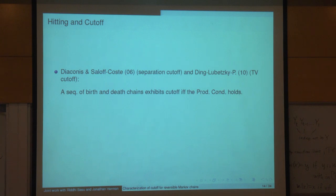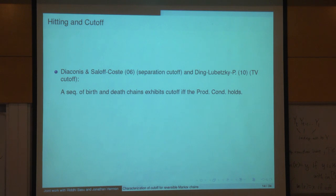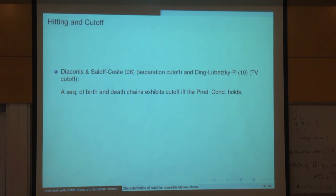This is the work with Hermon and Basu, where we'd like to sharpen the estimate so that the constants can be replaced by a ratio tending to one. One prototype case motivating this work is birth-and-death chains: you have a path of length N and the chain can stay in place, go one to the right, or one to the left.